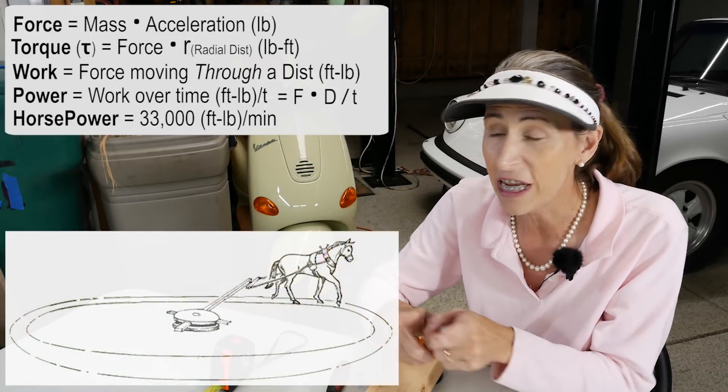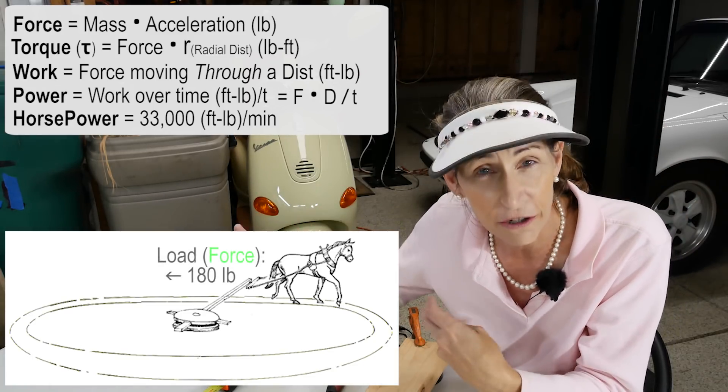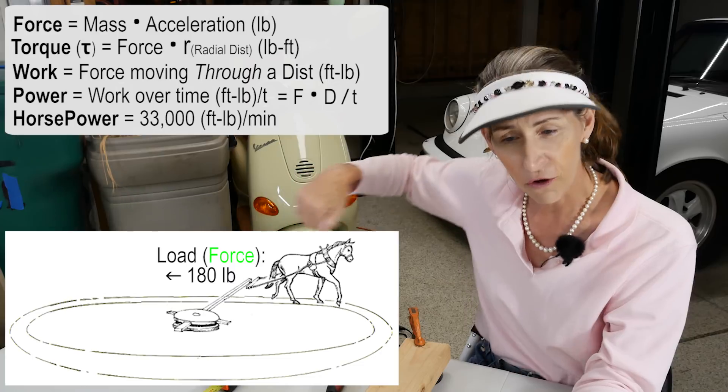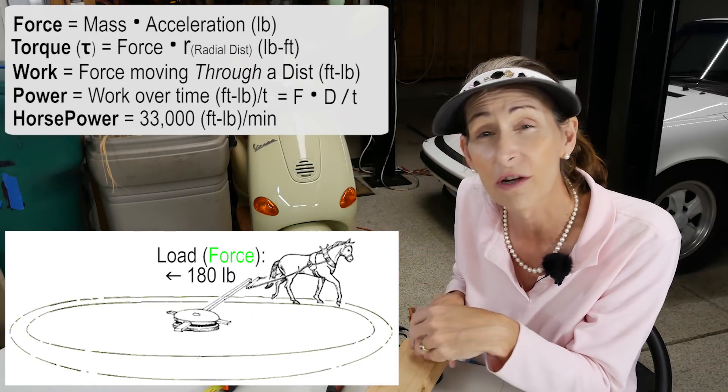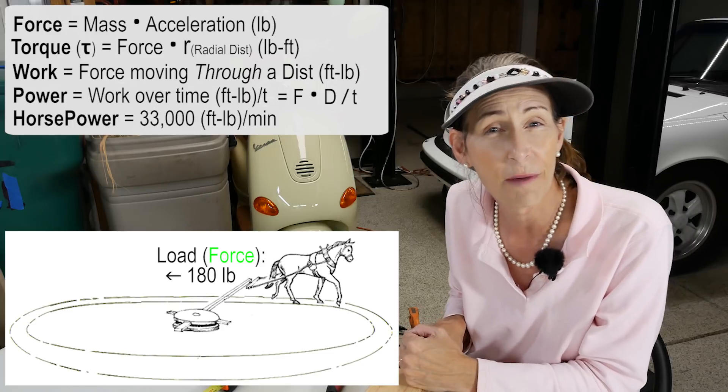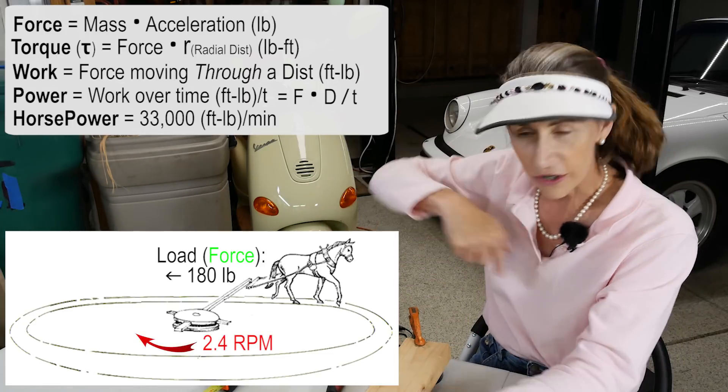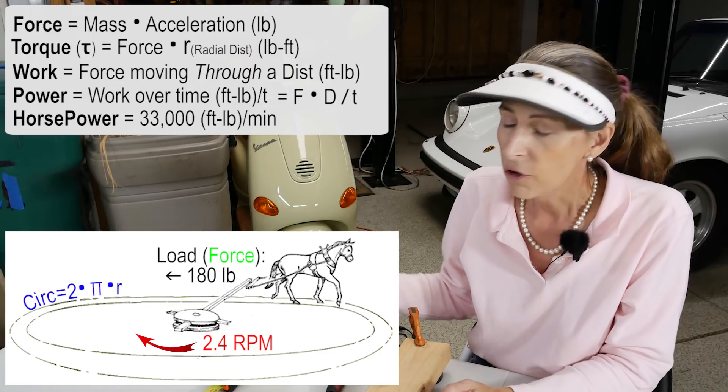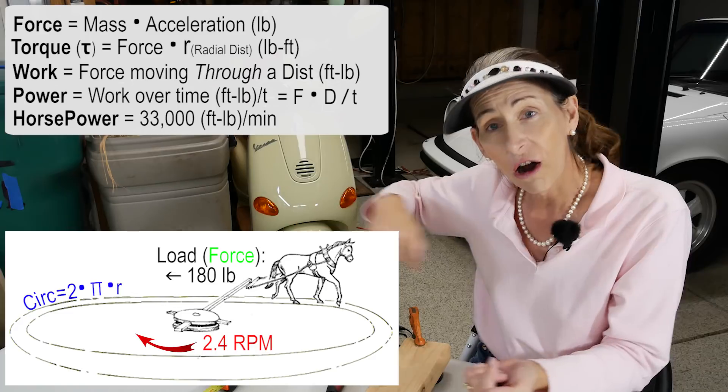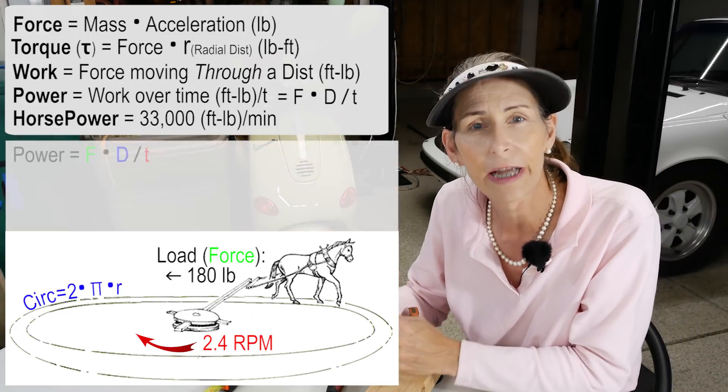So what he did, what James did, was he measured the amount of pull that the horse had to pull, which was 180 pounds. He figured the horse could, he watched the horse walk around 144 times in one hour. That works out to be about 2.4 revolutions per minute. So he knew the circumference because circumference is 2 pi r. So he could figure out how far the horse moved and what its pull was.